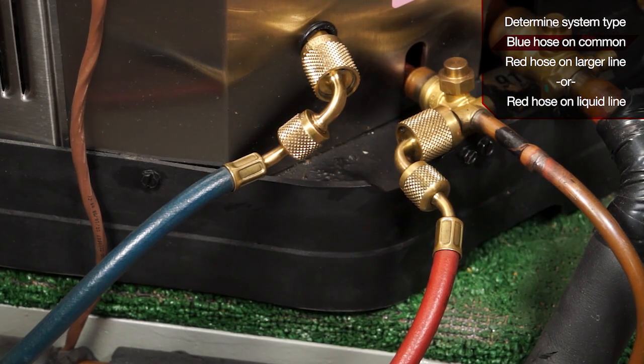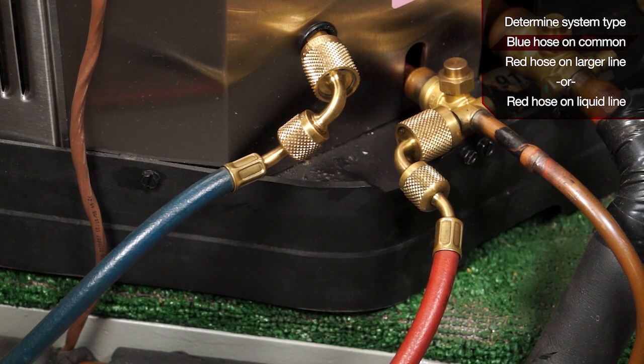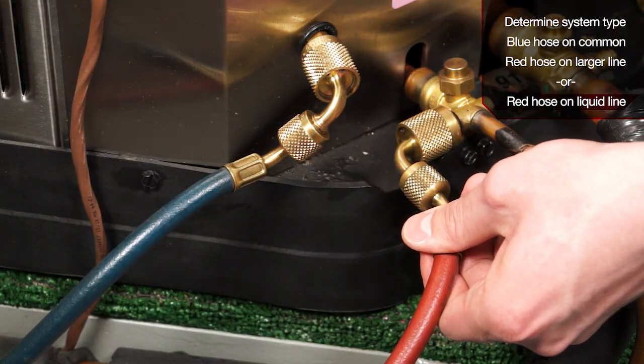When hooking up your hoses to a TXV driven system, place your blue hose on the common suction port and your red hose to your liquid line.